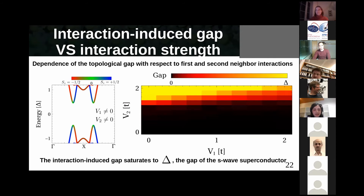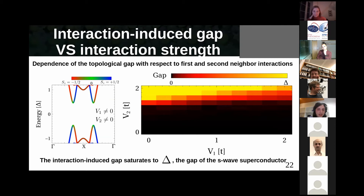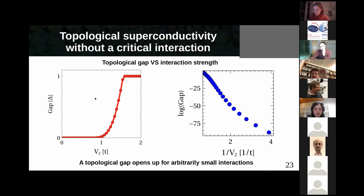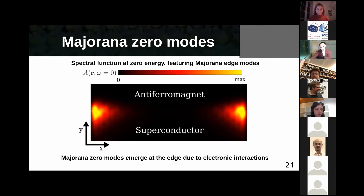Another interesting thing is that the topological gap can become really large and can actually saturate to the superconducting gap of the parent superconductor. In conventional proposals for topological superconductivity, the S-wave superconducting gap is usually an upper bound for the topological superconducting gap. In this antiferromagnet-superconductor case, you can actually reach the maximum topological gap fairly easily even with modest Coulomb interactions. Furthermore, this topological superconducting state appears at arbitrarily small repulsive interactions — there is no critical value — and you will have zero modes at the corners of your ribbon.